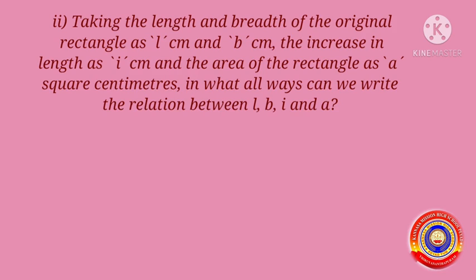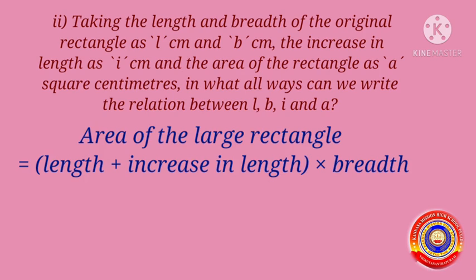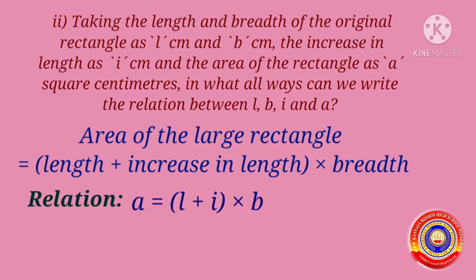Taking the length and breadth of the original rectangle as L cm and B cm, the increase in length as I cm, and the area of the rectangle as A square cm, in what all ways can we write the relation between L, B, I and A? We learnt that area of the large rectangle is equal to length plus increase in length, into breadth. Then we can write the relation using letters as A is equal to L plus I into B, or A is equal to (L plus I) times B.